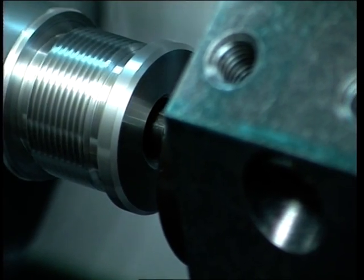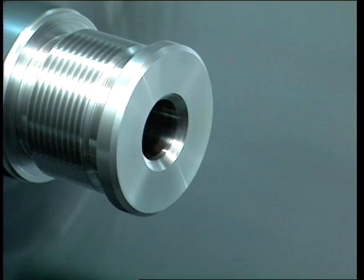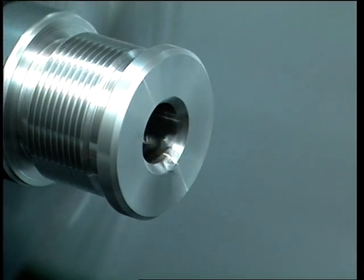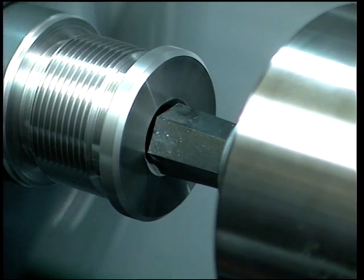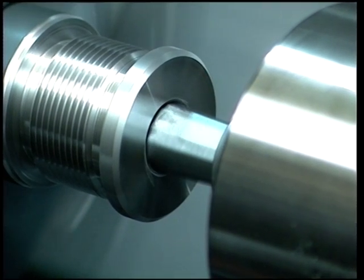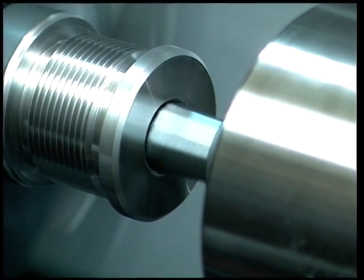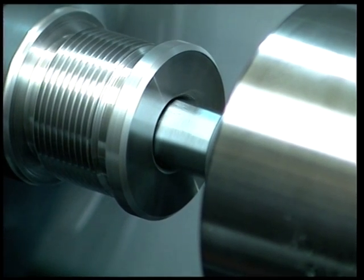Once the pre-broach hole has been made, it is important to note there is no need for any further operation. Now the broach, which is in a static position, is brought near the pre-broach hole of the cap, turning at between 500 and 1000 RPM.